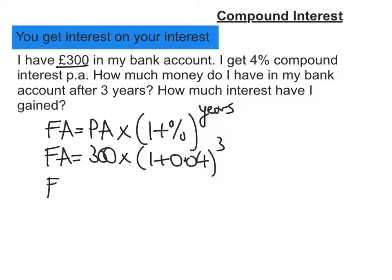So my future amount — putting that into my calculator — I'm going to get £337 and 46 pence. Remember, always give it to the nearest pence, to two decimal places if you can.